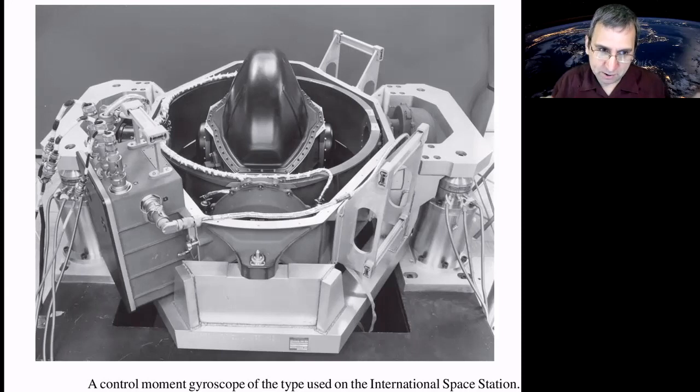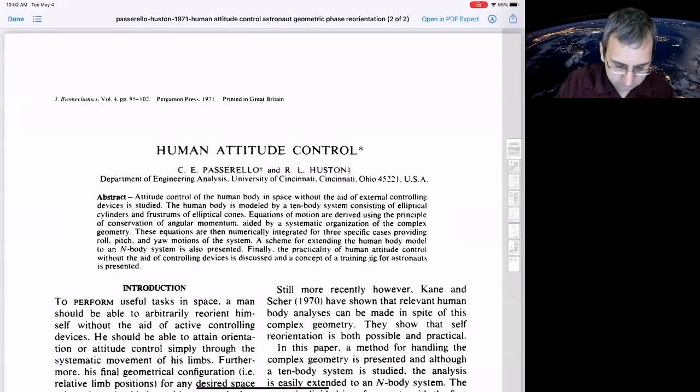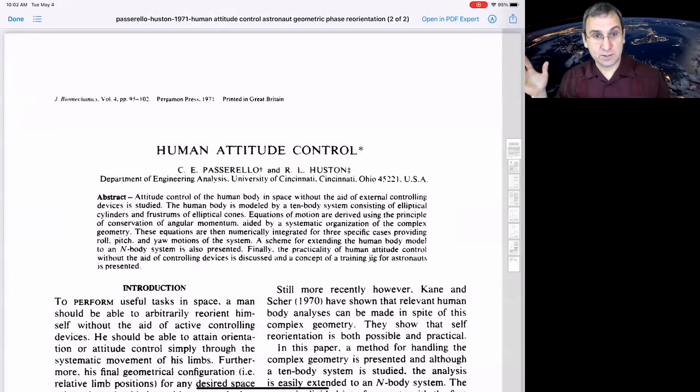Which is not gravity gradient stabilized, but it is a gravity gradient equilibrium. Yeah, this is kind of interesting. So this paper from 1971. They're like, if you're an astronaut and find yourself out in space, here's how you do human attitude control.